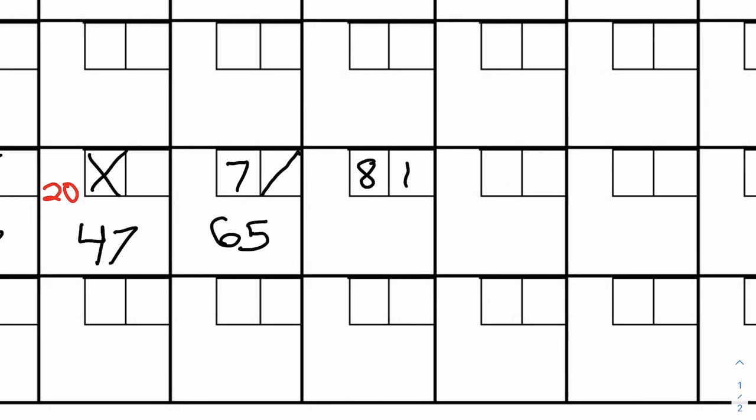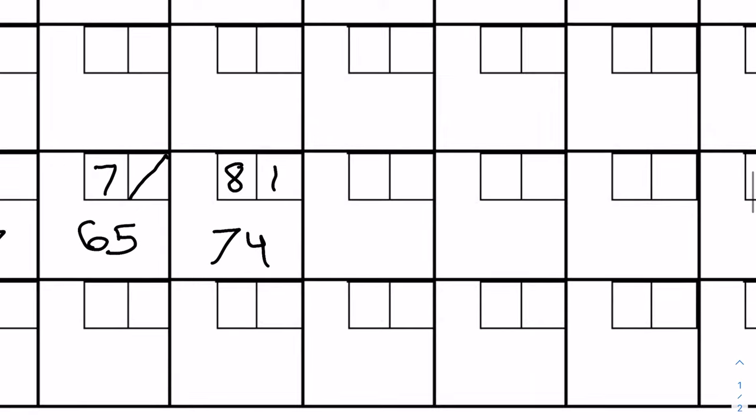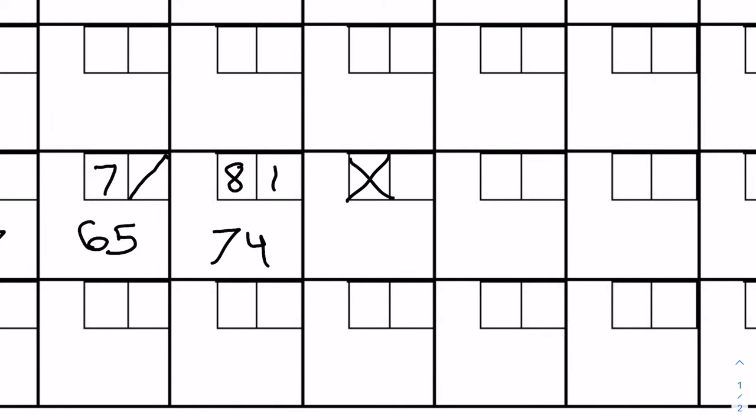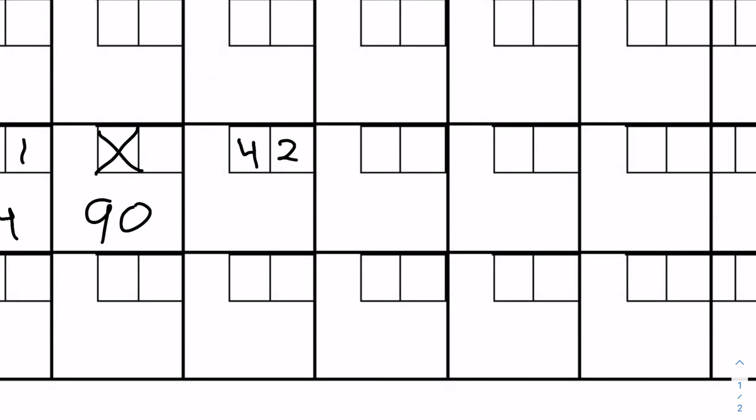He then gets a one, adding nine total points to bring the score to 74. Oliver then gets a strike — remember you count the next two balls after a strike. His next throws are a four and a two, so 10 plus 4 plus 2 equals 16 for that strike frame. Adding 16 to the previous total gives 90. Then there's an extra six points from the following frame to bring us to 96.